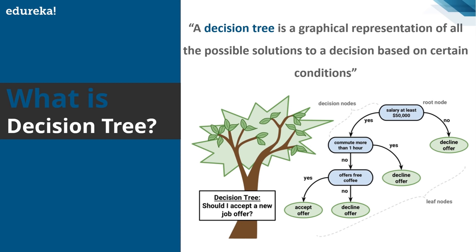A real-life example: when you dial the toll-free number of a credit card company, it redirects you to an intelligent computerized assistant that asks questions like 'Press 1 for English, press 2 for Hindi.' Once you select, it redirects to more questions. This keeps repeating until you reach the right person. You might think you're caught in voicemail hell, but the company was actually using a decision tree to route you correctly.